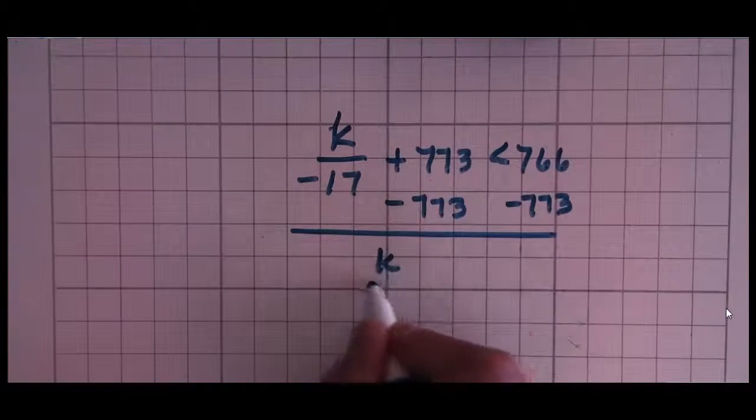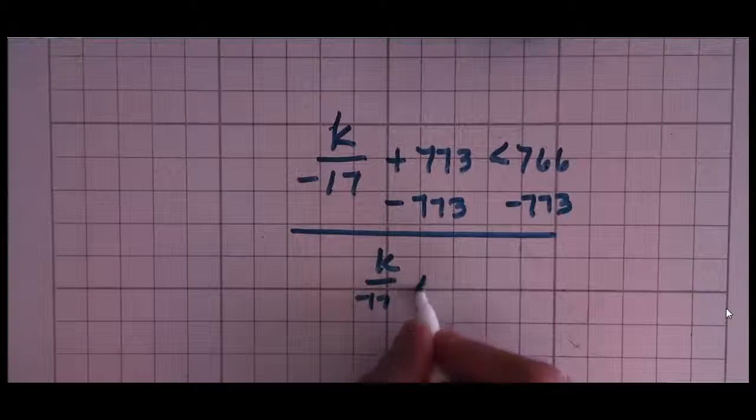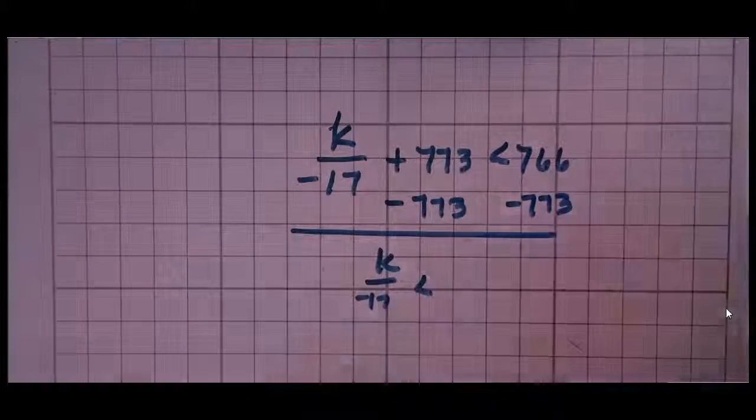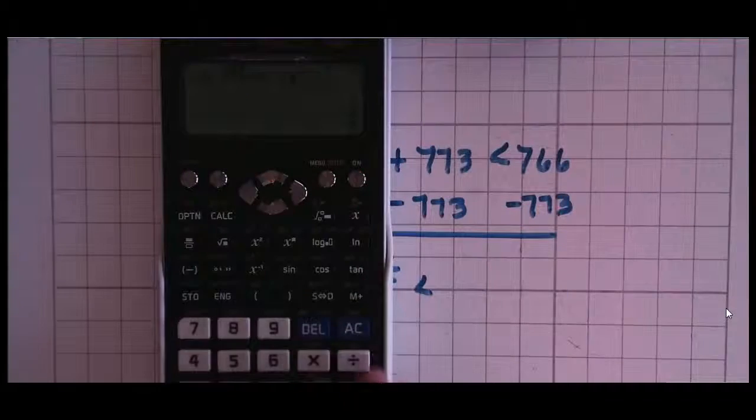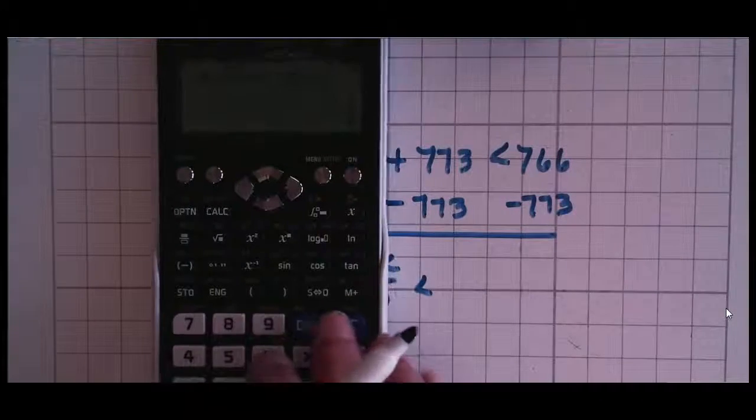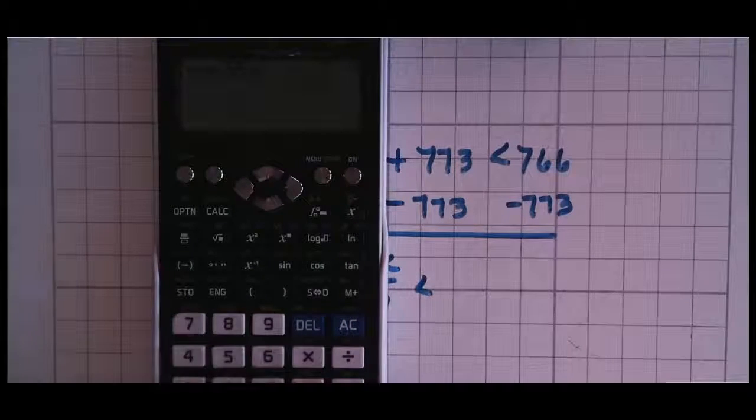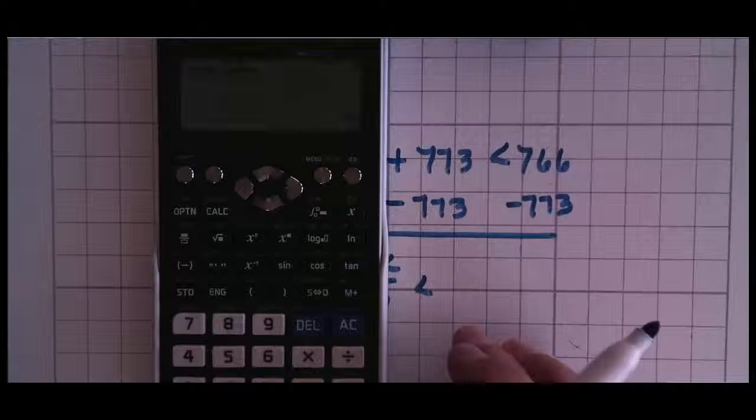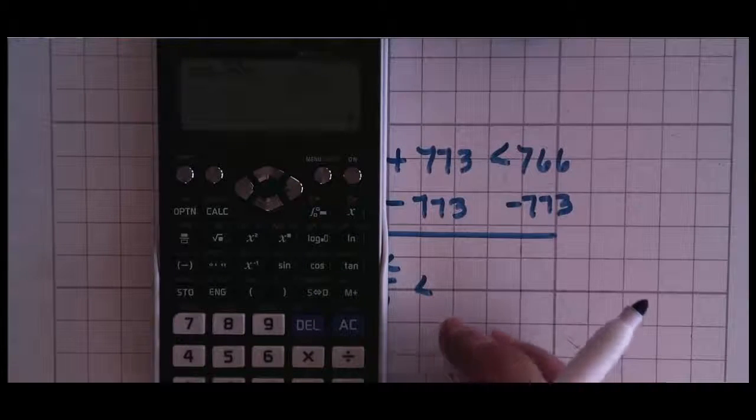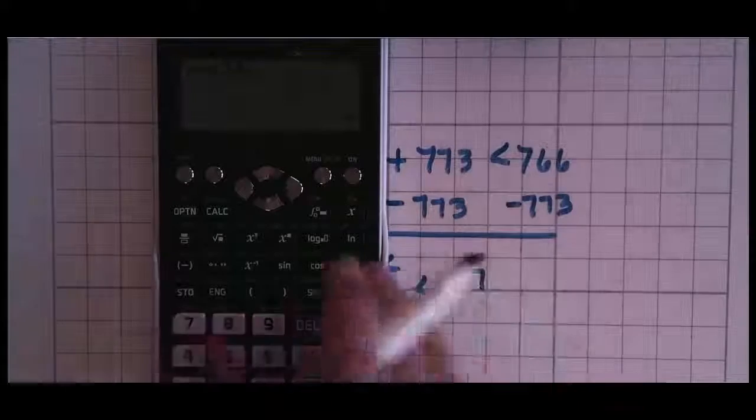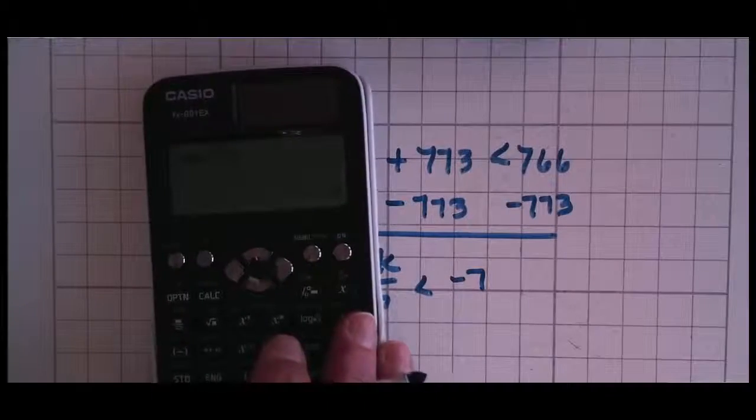And I get k over negative 17 is less than... Let's say I don't know what that is. I do know what it is, but let's pretend like we don't know what it is. 766 minus 773. And I see my answer looks like negative 7. Can you see that? I think you can.